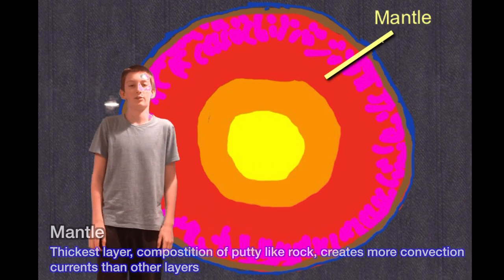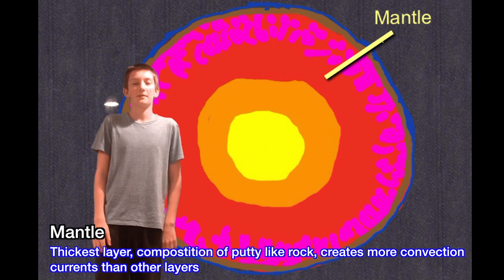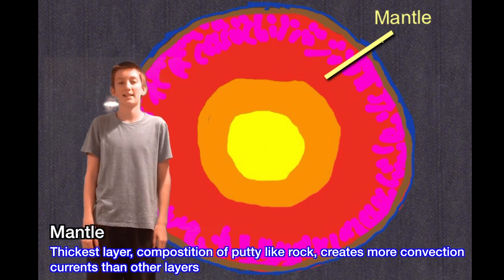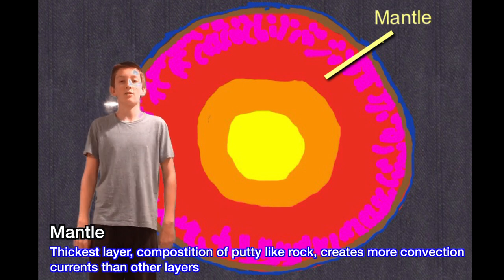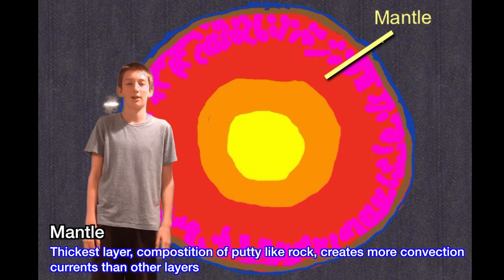Third off, we have the mantle. It is the thickest layer. Because it is less dense, it contains less dense materials like oxygen, calcium, and aluminum. It also creates the most convection currents compared to every other layer.